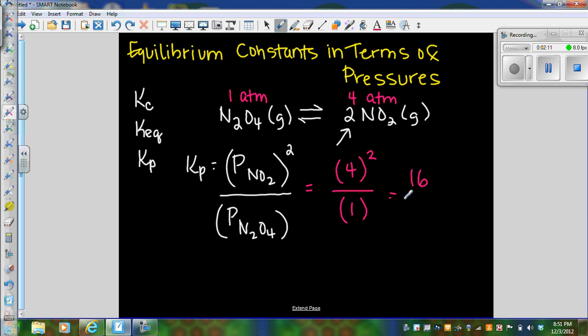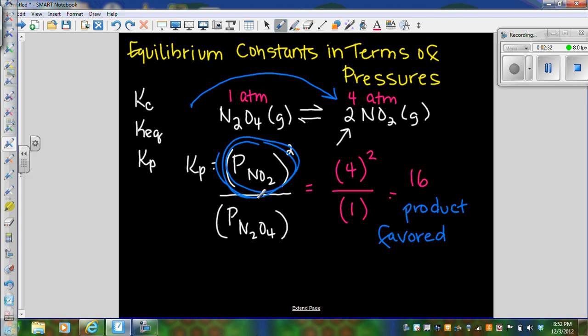So four squared is 16 divided by one is 16. Our Kp is larger than one, so what that tells us is that equilibrium lies to the right. So this is product favored. Now what that means is that you have more of the NO2 or more pressure of the NO2, but yet the rates of the forward reaction and the reverse reaction are equal.